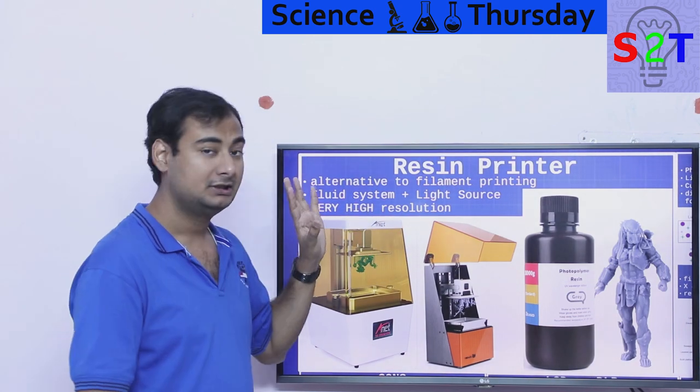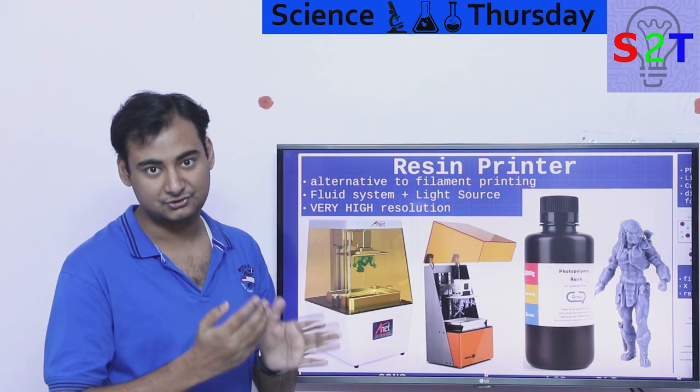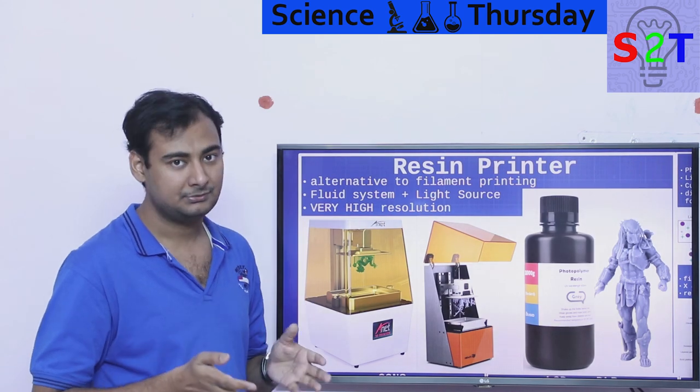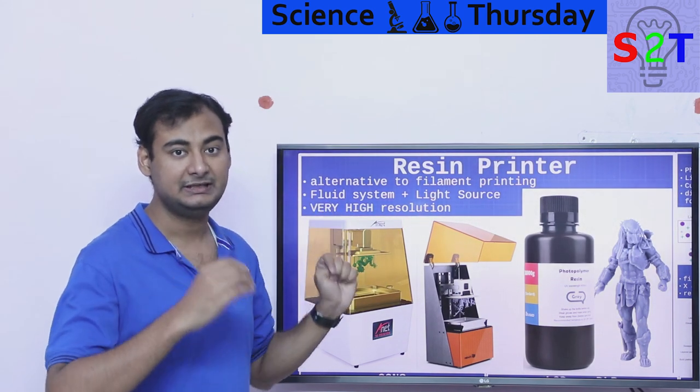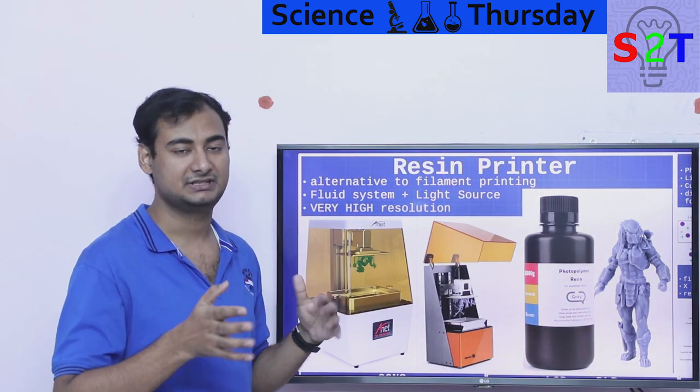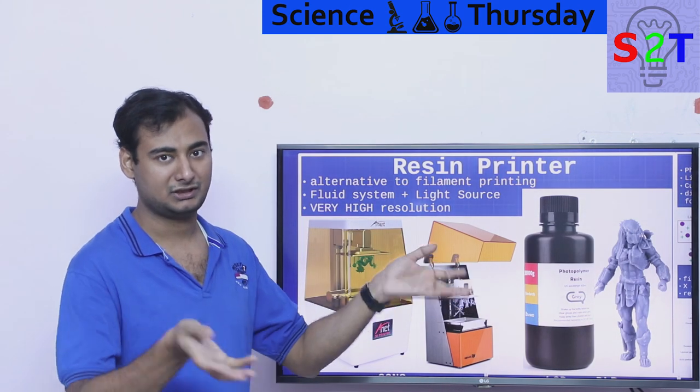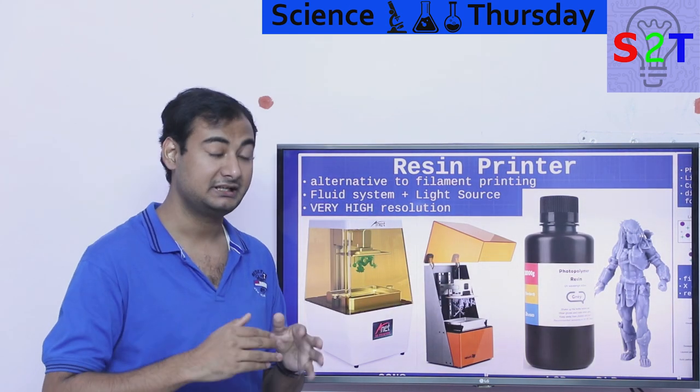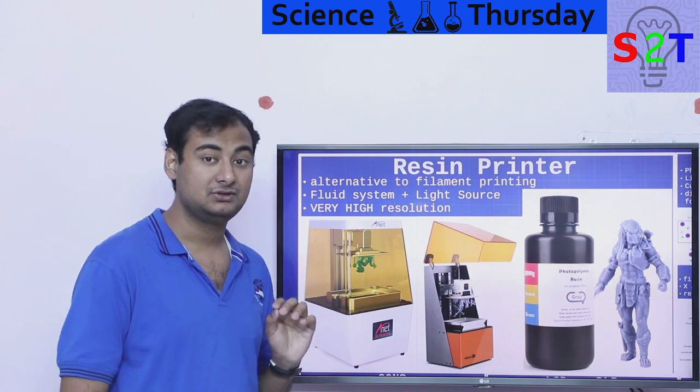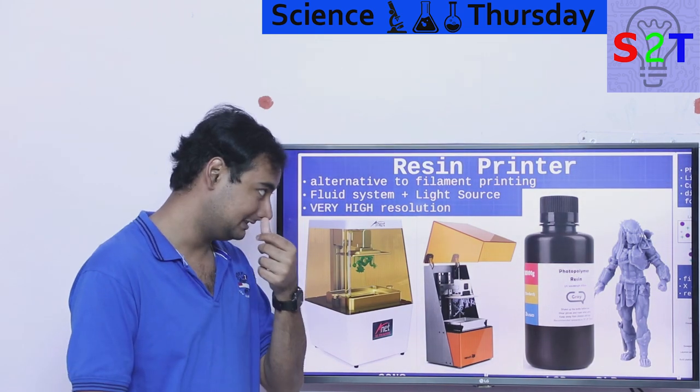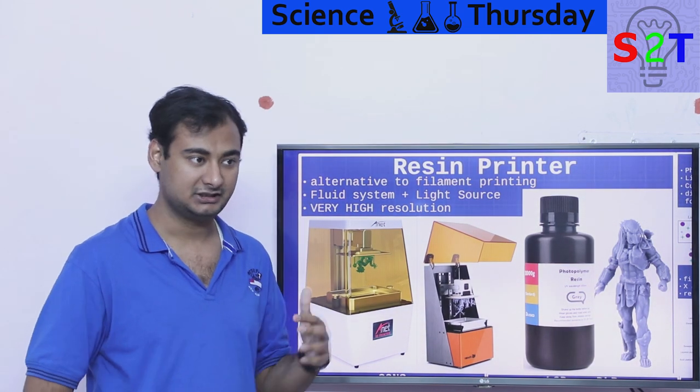You have the fluid, the resin in liquid form, and 3D printers are supposed to print solid objects. So using a light source they make it solid. It's not a thermal process like freezing water, it's a chemical process and it produces very high resolution products.